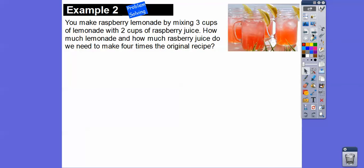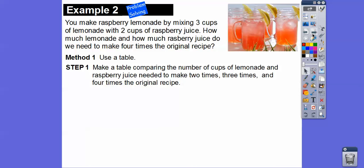We can make raspberry lemonade by mixing three cups of lemonade with two cups of raspberry juice. How much lemonade and raspberry juice do we need to make four times the original recipe? One way is to make a table comparing lemonade and raspberry juice needed for two times, three times, and four times the original recipe.